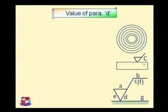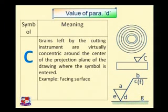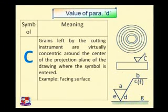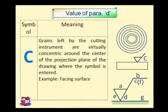Another value for parameter D is capital C — written at position D on the machining symbol. C means that the grains left by the cutting instrument are virtually concentric around the center of the projection plane of the drawing where the symbol is inserted. If this symbol is drawn, it means the surface should have a circular cut pattern.